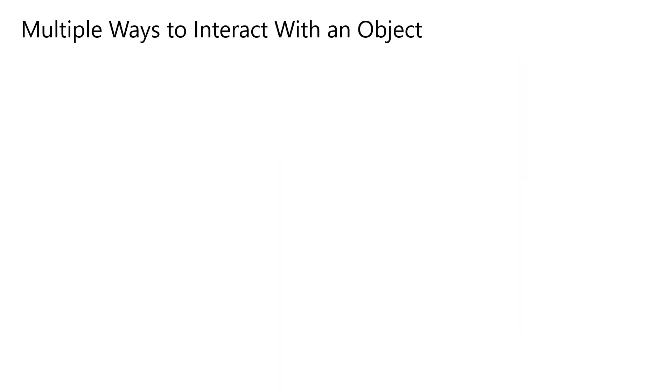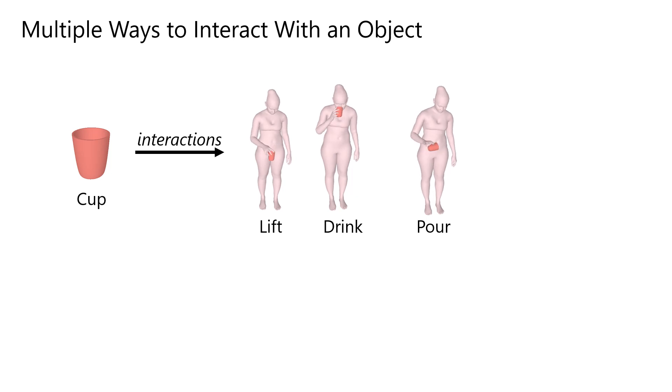There are multiple ways to interact with almost any object. For instance, a plausible set of interactions with a cup is to lift it, drink from it, pour from it, or pass it on.